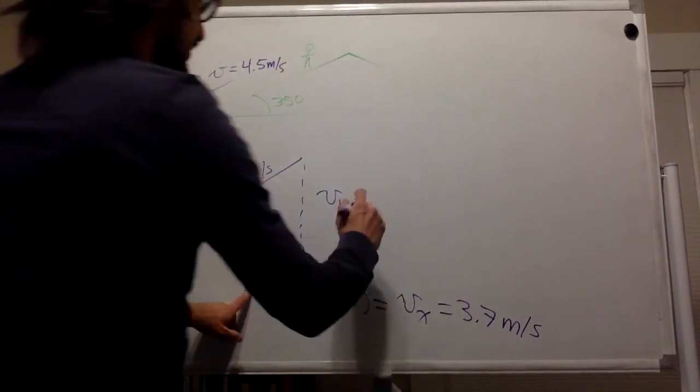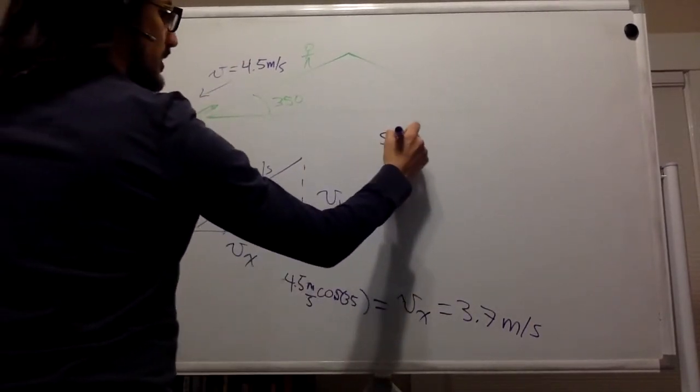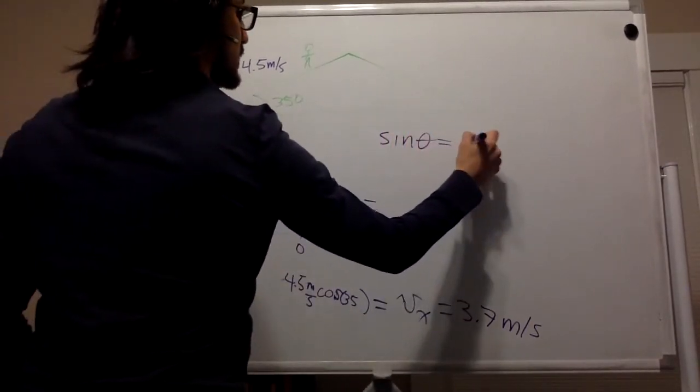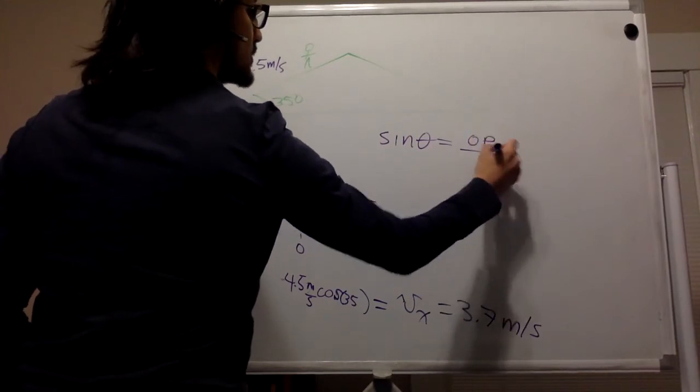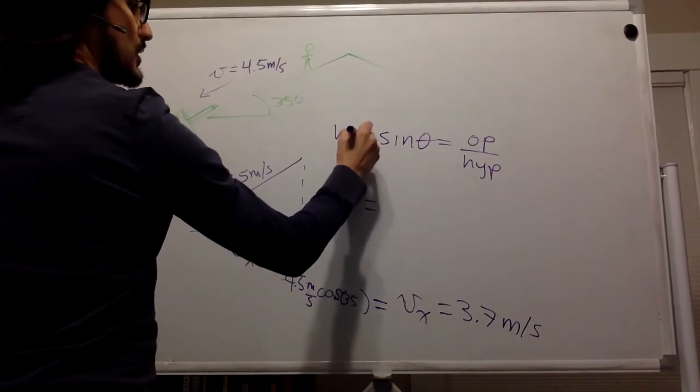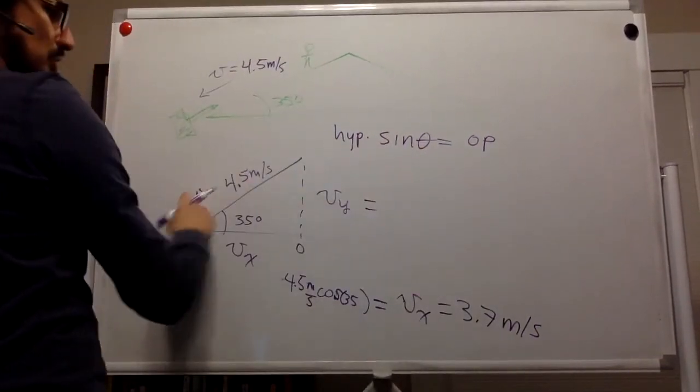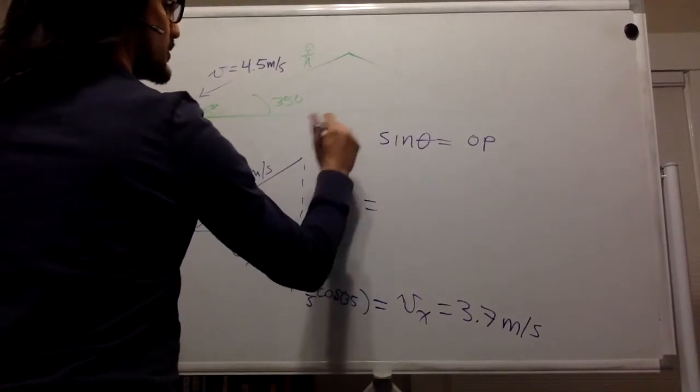And for the y component, it's the same thing. So sine theta is opposite divided by hypotenuse. So we move the hypotenuse over here to get the opposite. The hypotenuse is just the velocity, the magnitude of the velocity vector.